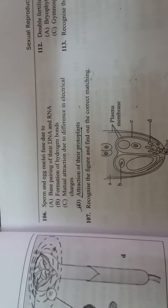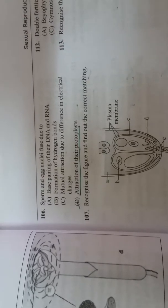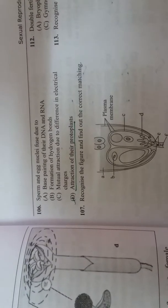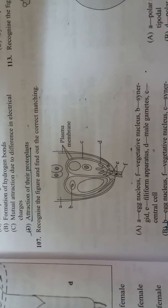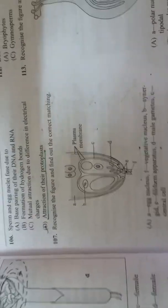Number 106: Sperm and egg nuclei fuse due to attraction of their protoplast. Recognize the figure and find out the correct matching. This type of figure, what do you do?